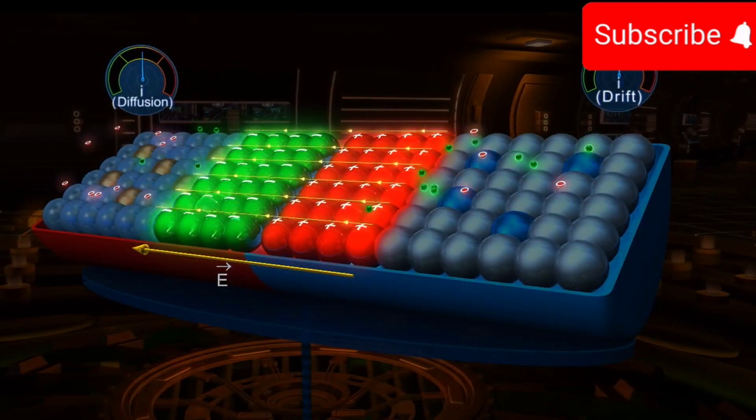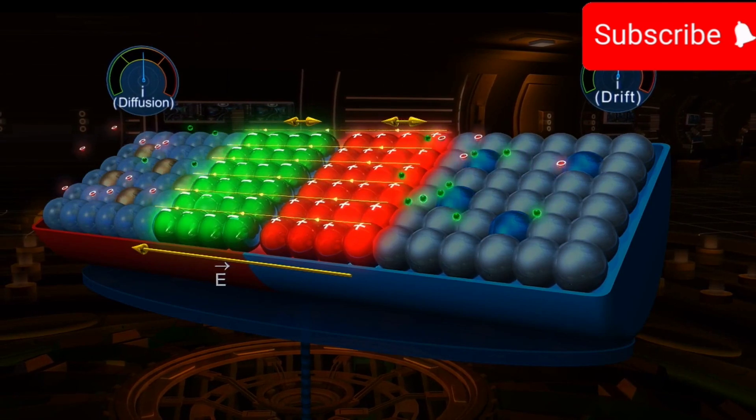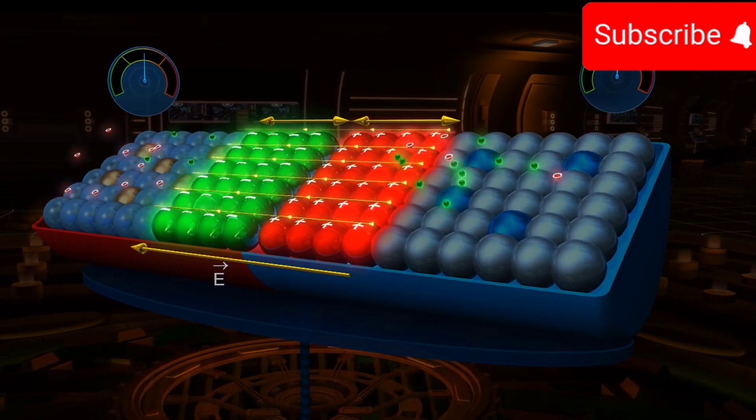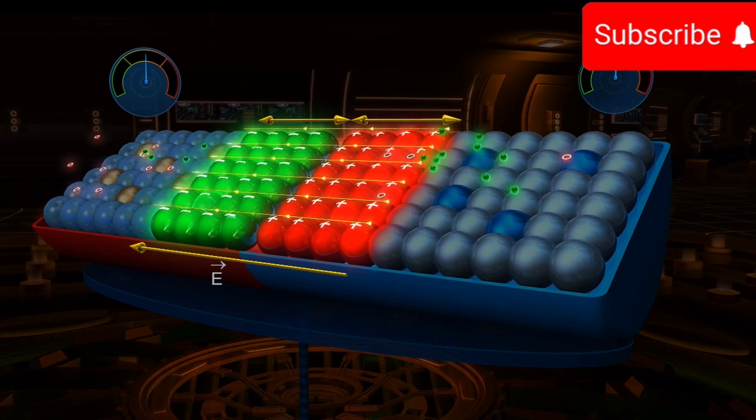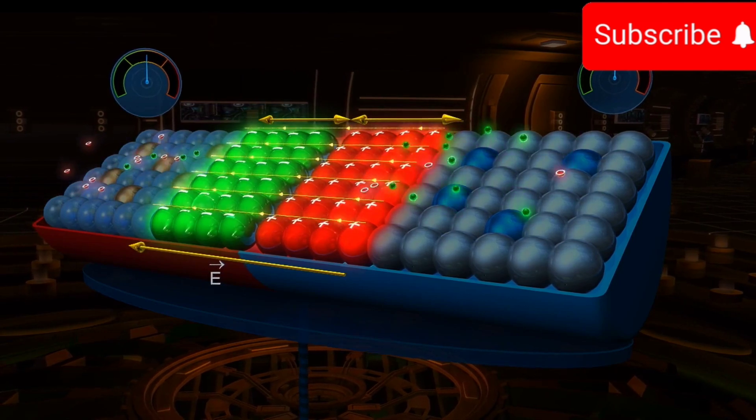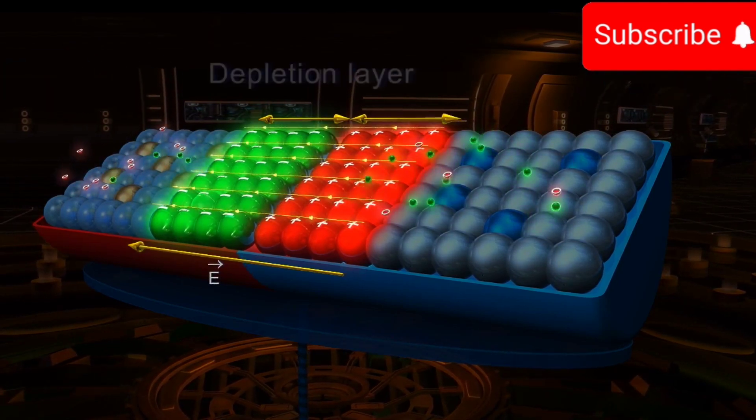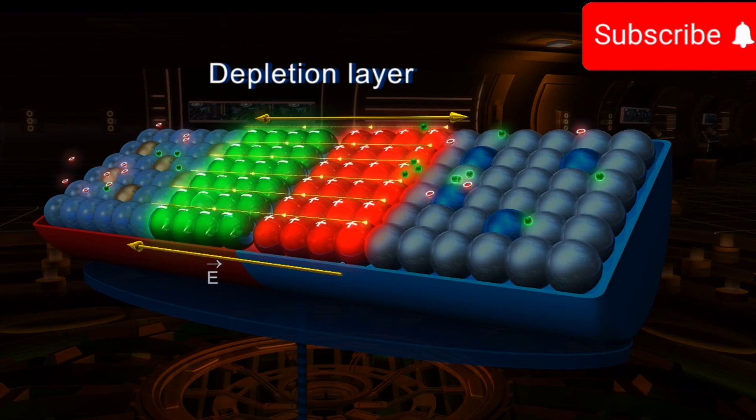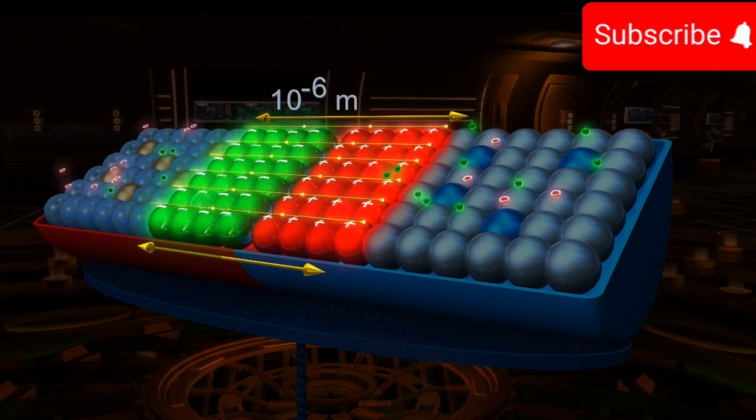Thus, there is a small region on each side of the junction consisting of only immobile ions and is depleted of free electrons and holes. This region is called the depletion layer. Its thickness is of the order of 10 raised to minus 6 meters.